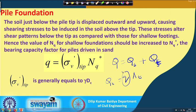Since we are considering a pile driven in sand, the c·Nc part is absent. Between the surcharge part and the unit weight part, the unit weight part becomes negligible because of the small pile size compared to the surcharge component. So we decided to ignore the 0.4·γ·B·Nγ term, and ultimately q equals γ·Df·Nq.